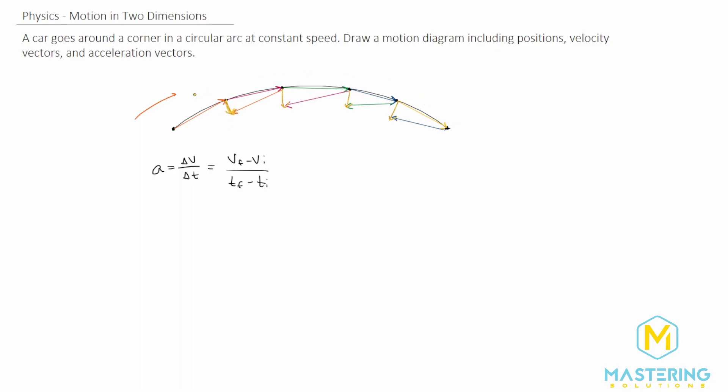So this, as I said, is our completed picture here for a graphical representation showing all of the position, velocity vectors, and acceleration vectors for a car going around a circular arc at a constant speed.